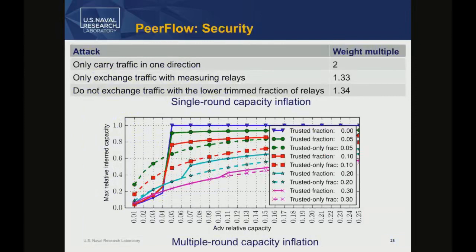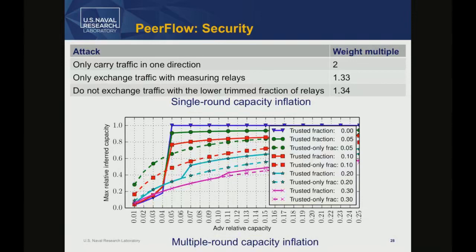We were able to reason carefully about PeerFlow and prove a bound: if you have a certain weight, your inferred capacity should be no more than some bounded multiple of that, at least in a given round. There are non-trivial remaining multipliers from residual attacks — for instance, a guard could pretend to talk to clients without actually doing so (gaining a multiple of two), or a relay could exchange traffic only with measuring relays to exploit that they're the only ones with a vote. These multipliers combine, but for reasonable parameters end up around 3.5 to 4.5 overall.